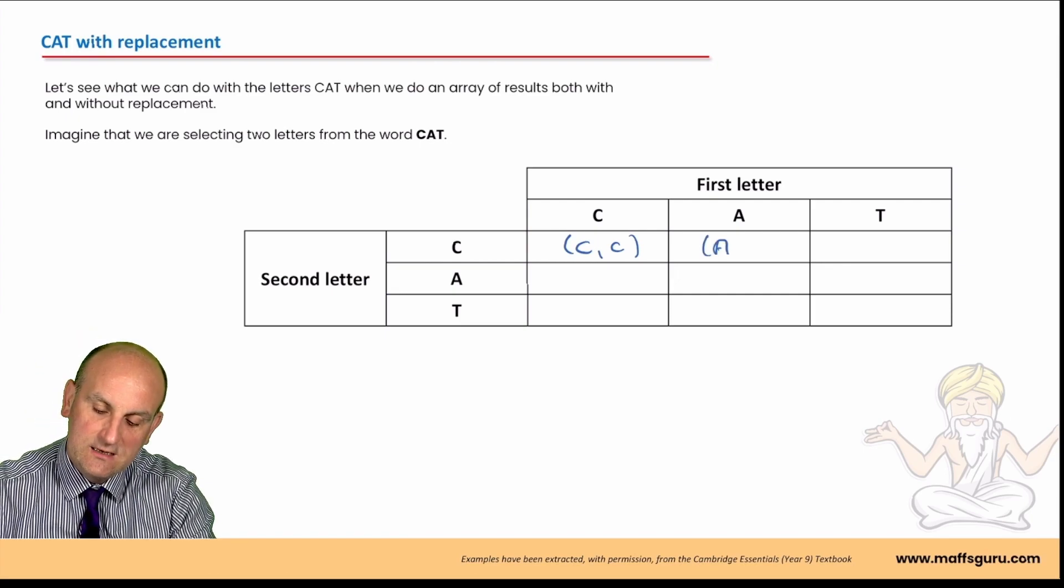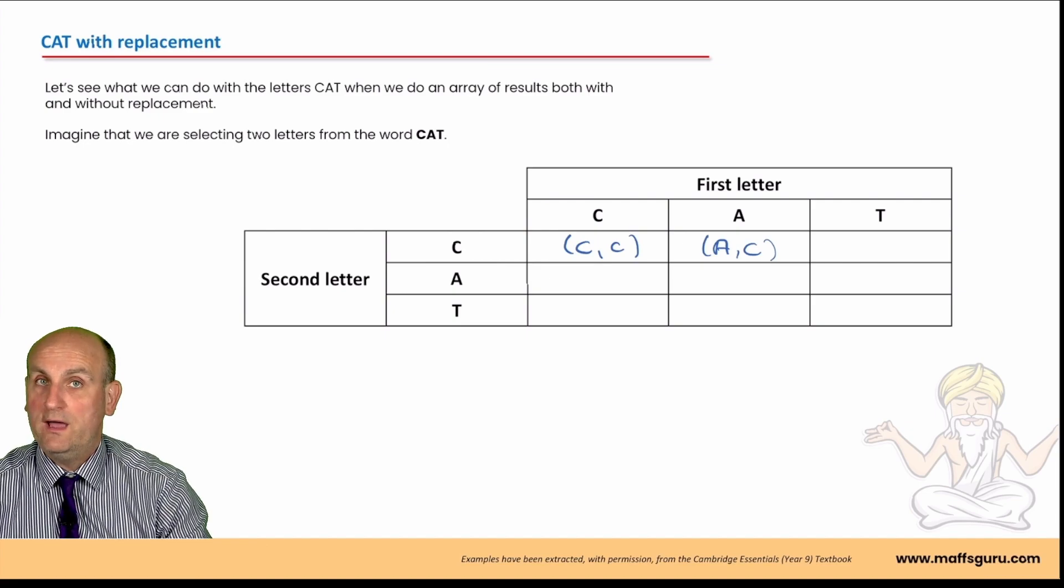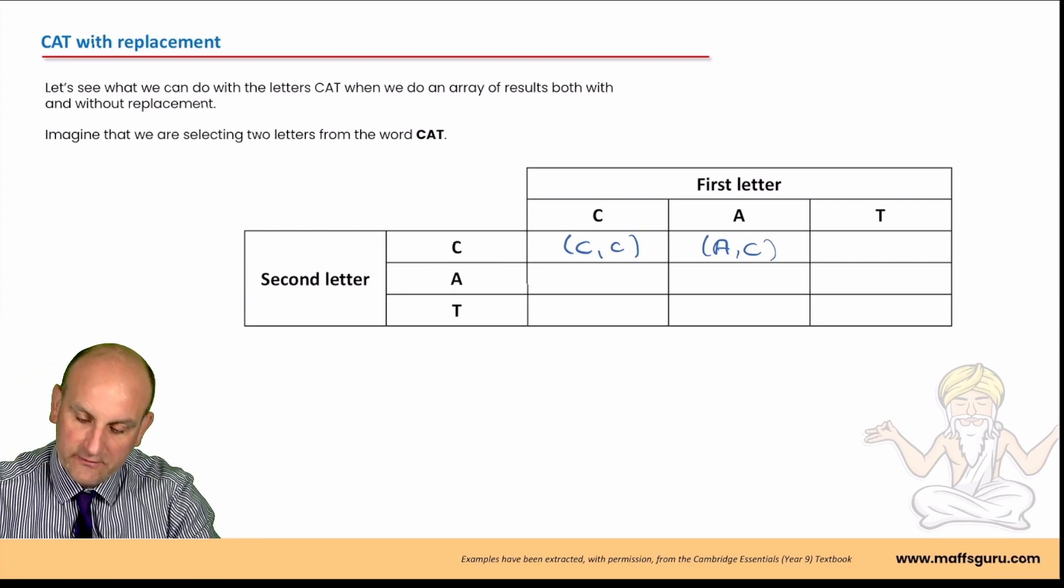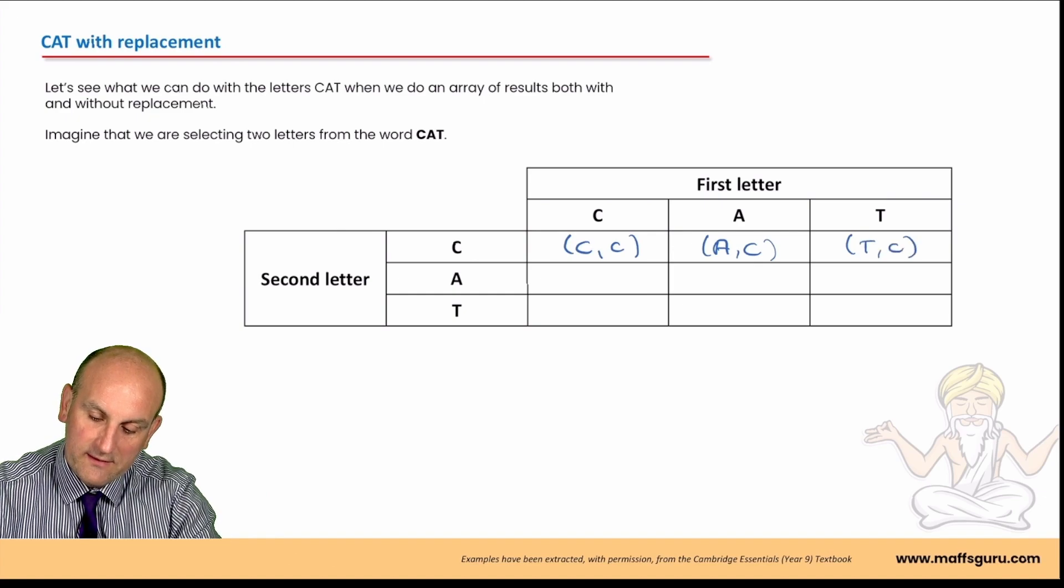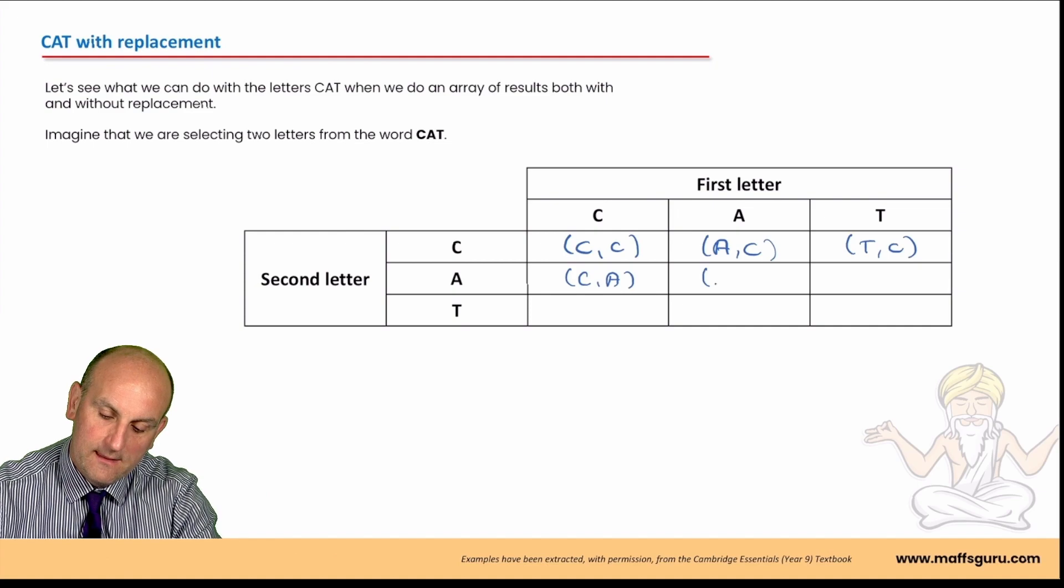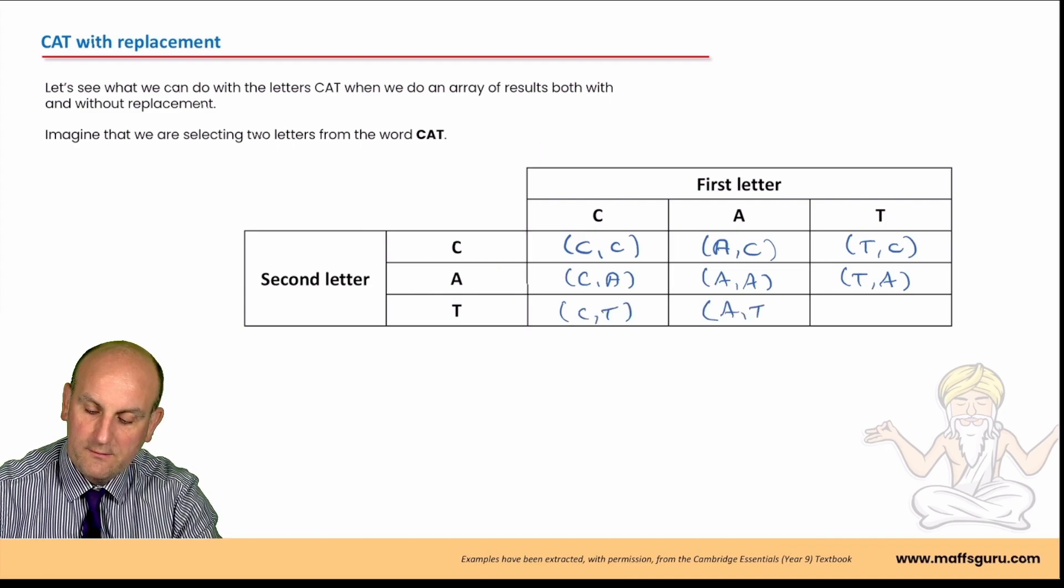So, if I now write here, C comma C, that is absolutely possible. Because I can have the letter C and I can have the letter C followed again. This one here is going to be A comma C, not C comma A. Why? Because the first letter is an A, the second letter is a C. This is going to be T comma C. This is going to be C comma A, A comma A, T comma A. This one here is going to be C comma T, A comma T and T comma T.